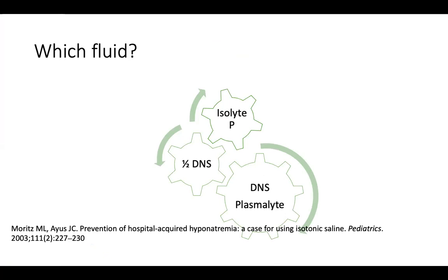Which fluid do you want to use? Traditionally we have been using Isolyte P — because it had a sodium content similar to breast milk. But subsequently we found that when a hypotonic fluid like Isolyte P is used, there is a high incidence of hyponatremia. When using an isotonic fluid, the incidence may be less than 10%, whereas when using a hypotonic fluid, the incidence may be more than 50%. That is why Isolyte P is no more routinely prescribed as a maintenance fluid.